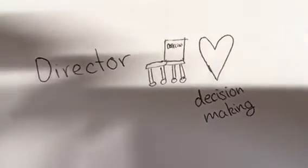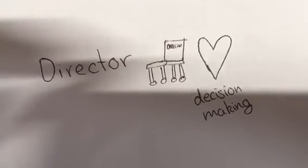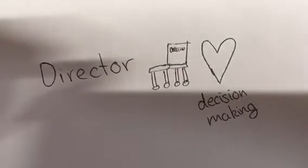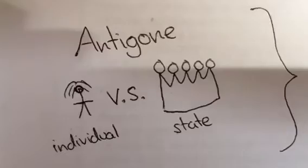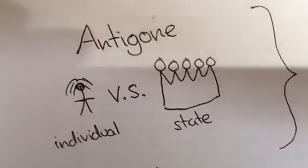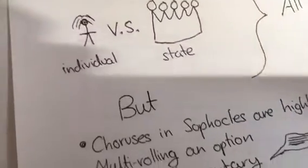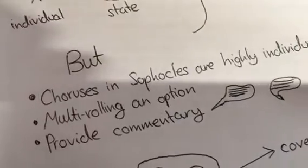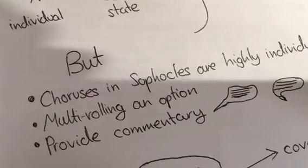The director comes into play, because the director could decide what to put at the centre of his production. For example, Antigone is a play about the individual versus the state, but in Sophocles, choruses were highly individualised and multi-rolling was an option.